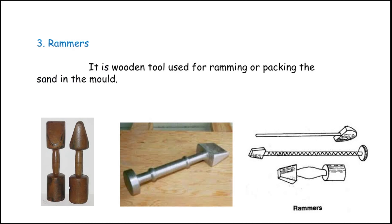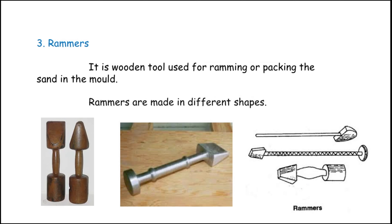The next one is the rammer. It is a wooden tool, though sometimes it is made of metal also. It is used for ramming or packing the sand in the mold. Mold rammers are made in different shapes to ensure good ramming even at the corners.